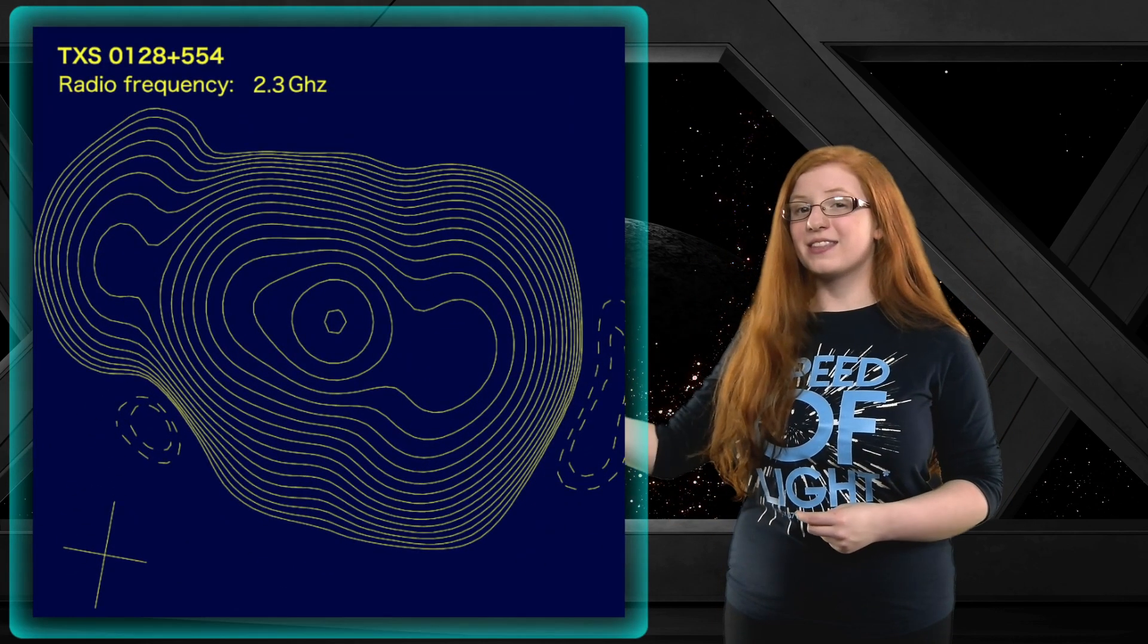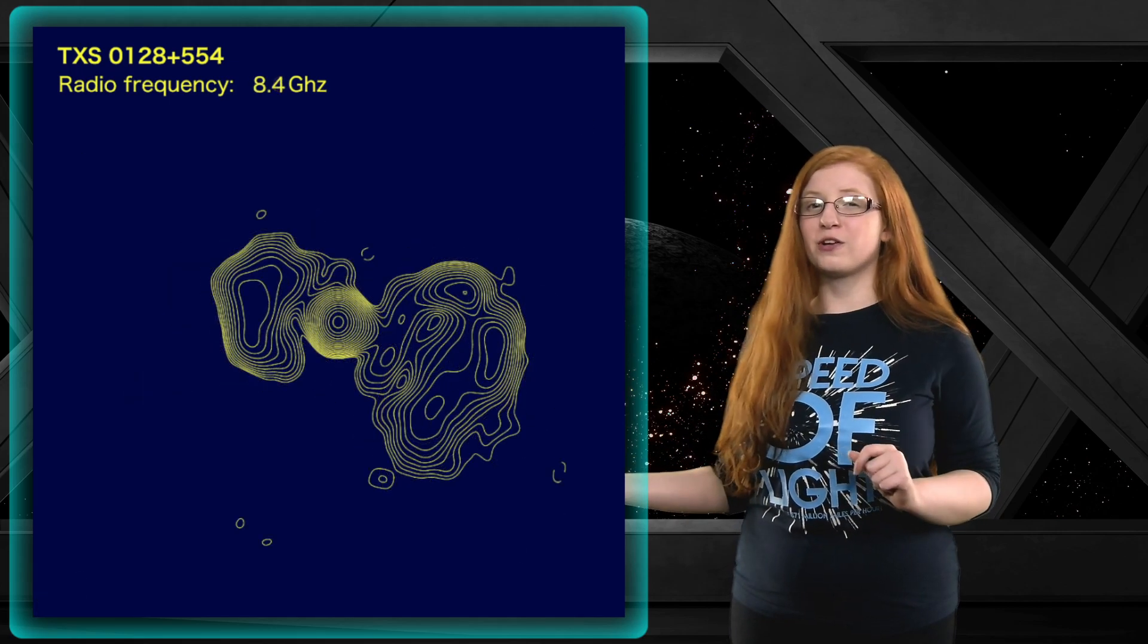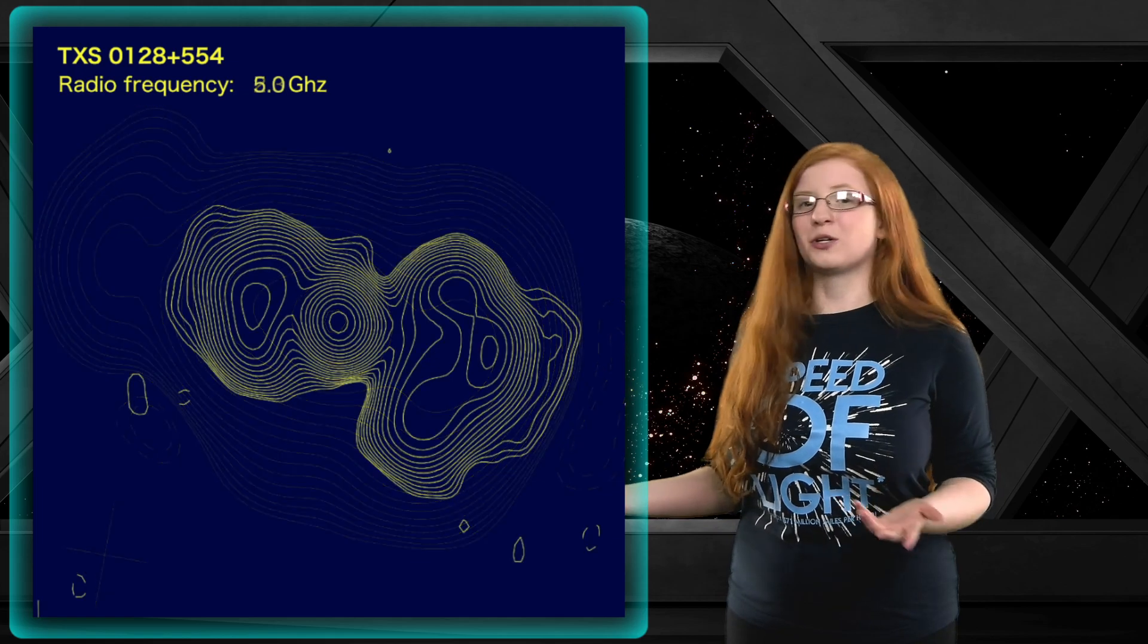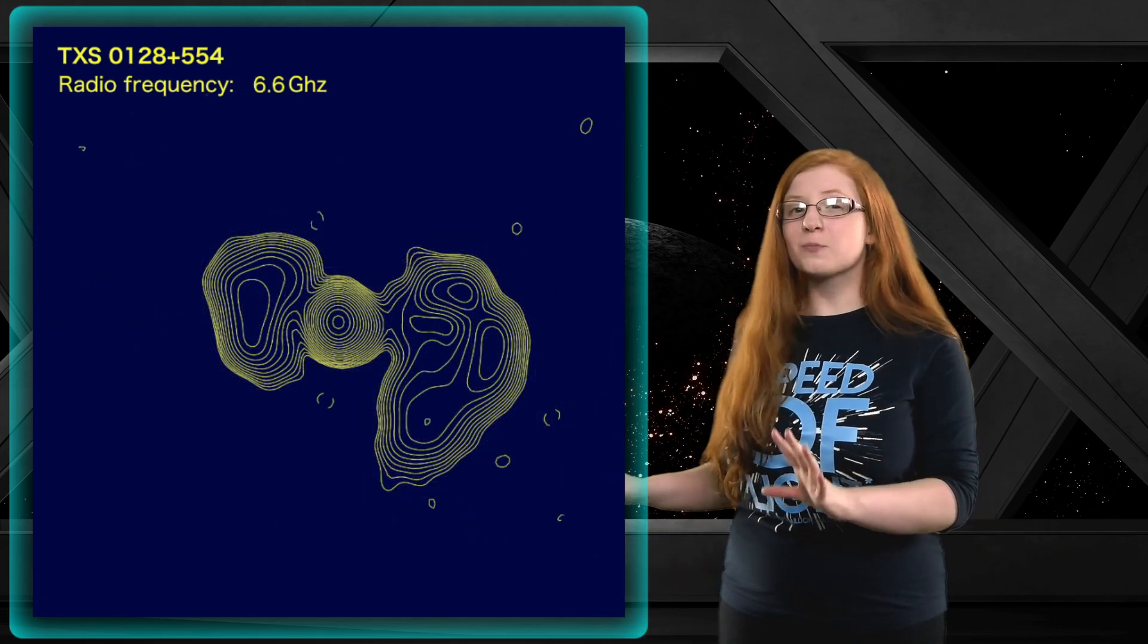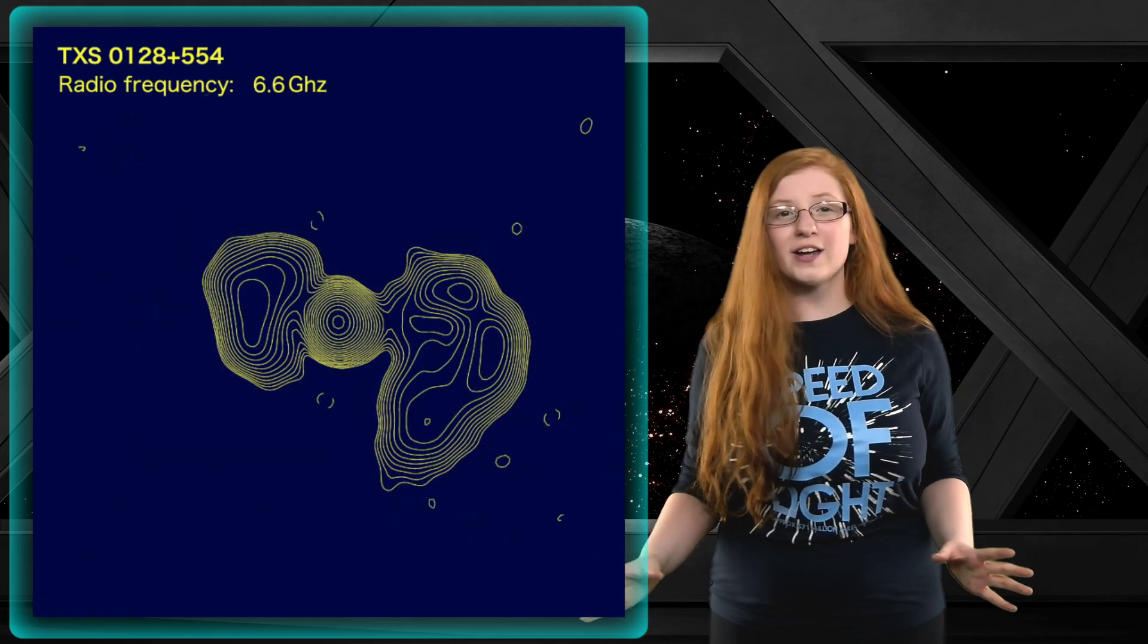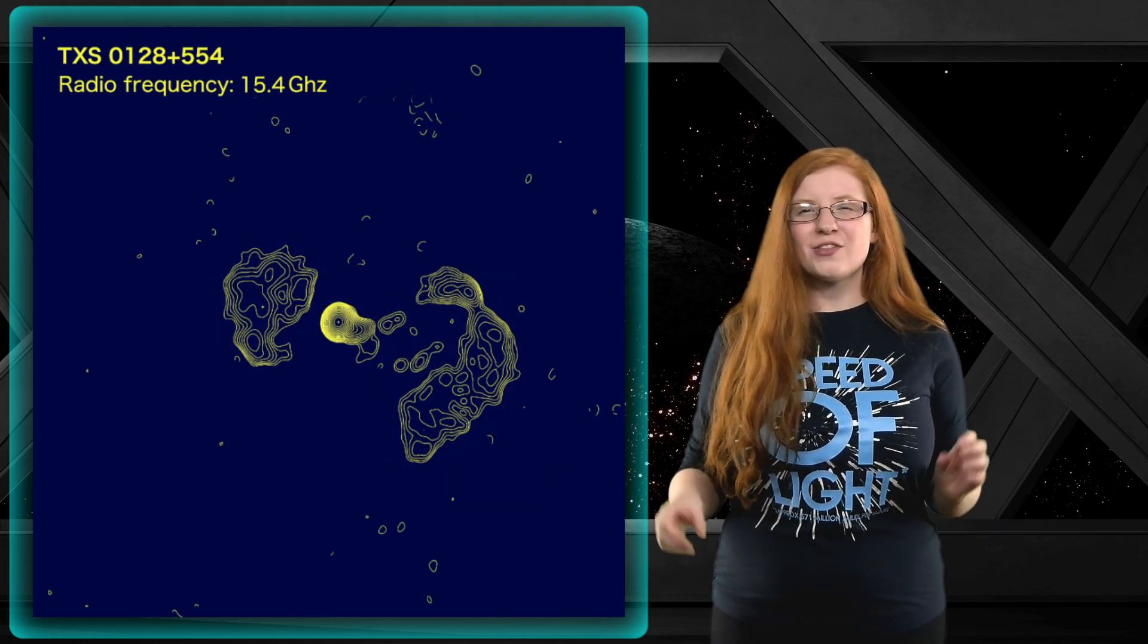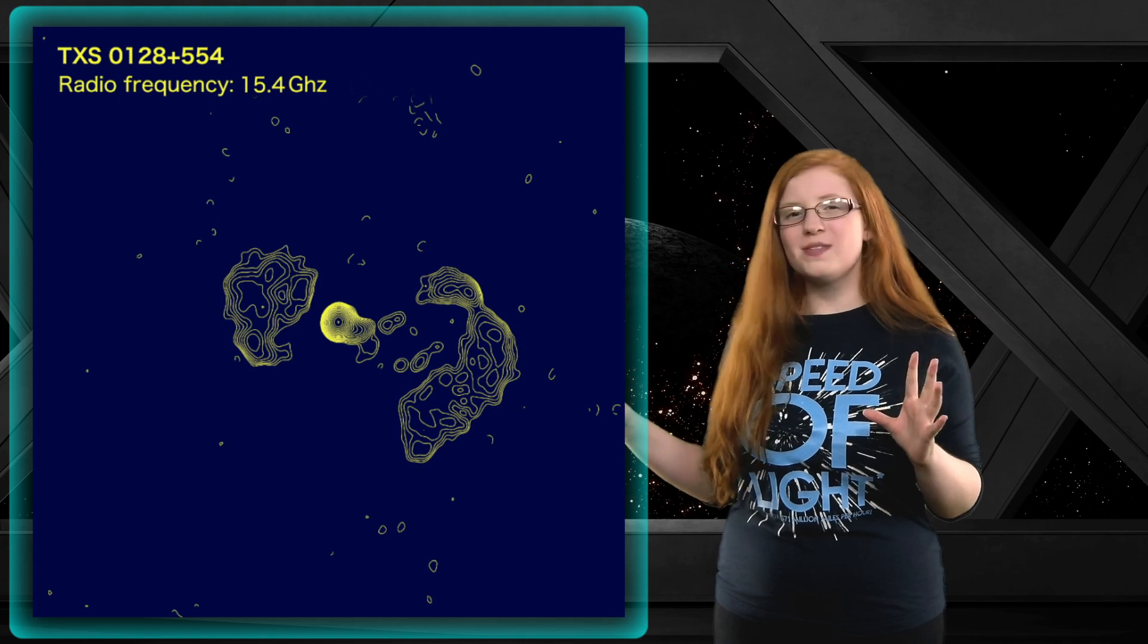They put together this GIF to show just a few of the frequencies they used. At about 2.3 GHz it looks like a blob, and then at 6.6 it looks like a TIE fighter from Star Wars. Then at 15.4 GHz there is a gap between the lobes and the core.